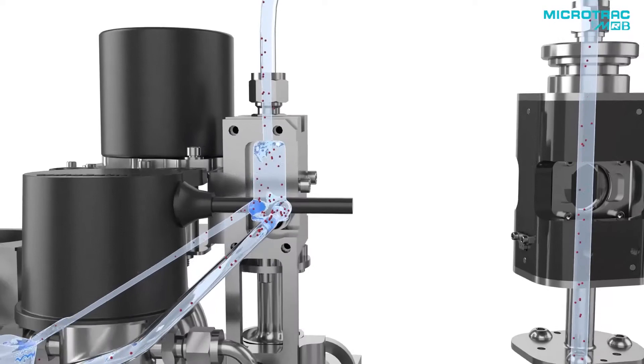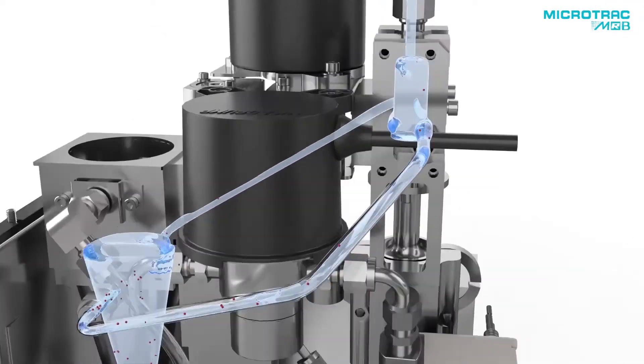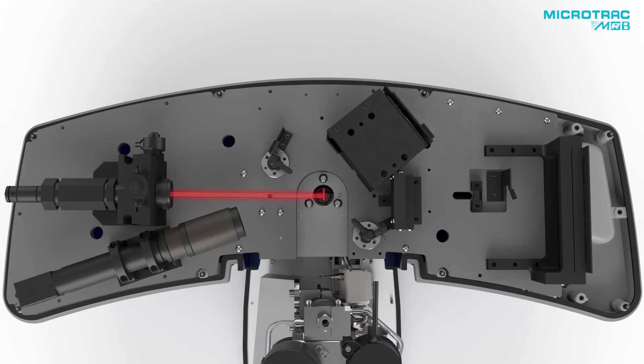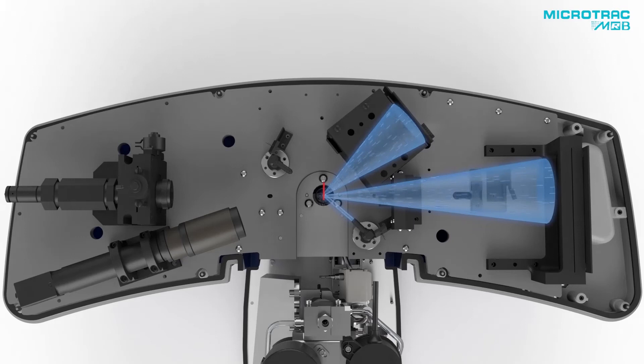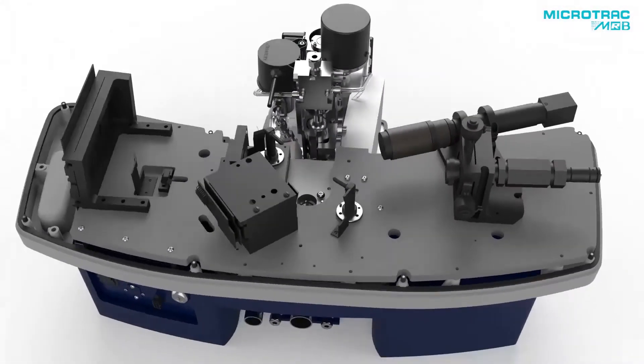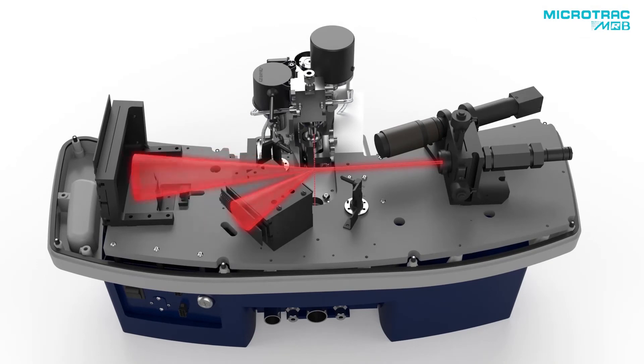As particles flow through the sample cell, they are interrogated by the laser diodes and the imaging system. Microtrack's patented tri-laser optical arrangement incorporates three diode lasers and two always-on detector arrays in fixed positions. The laser sequence captures scattered light across 165 degrees. Simultaneously, a separate LED light source illuminates the sample cell, while a high-speed digital camera takes live images of the sample.